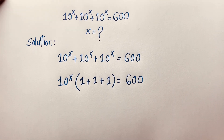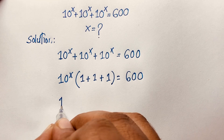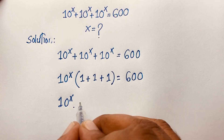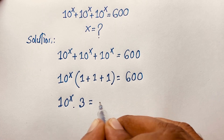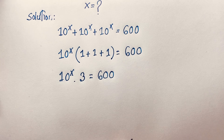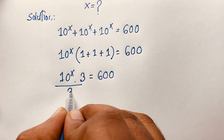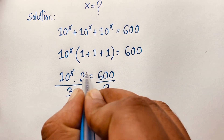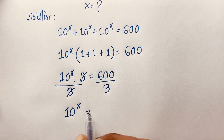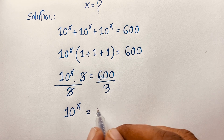You can see easily here is 10 to the power x times (1 plus 1 plus 1), which will be 3, is equal to 600. Now, if I divide both sides by 3, the 3s cancel out, and we find out here is 10 to the power x is equal to 600 divided by 3, which will be 200.